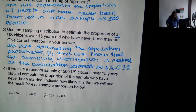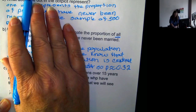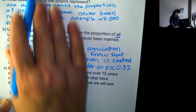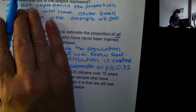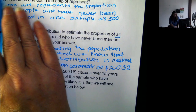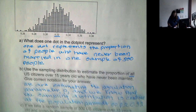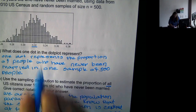Now, if we take a random sample of 500 U.S. citizens over 15 years old and compute the proportion of the sample who have never been married, how likely is it that we will see each of these results? For a sample proportion of 0.30 — a lot of values are as extreme as 0.30 — so this is pretty likely. For 0.20, that value isn't even on the dot plot, so that means it's very unlikely.